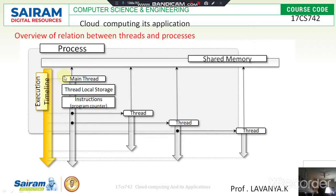Now I will move on to the relationship between thread and process. This explains how the relationship happens between threads as well as processes. Looking at this diagram, we have three units: the first is processes, the second is execution timeline, and the third is shared memory. These are very important units which handle all the threads.